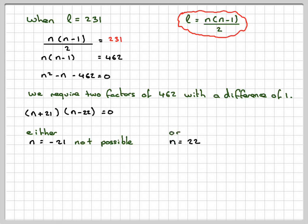Or, N equals 22, which gives 22 points, will give 231 lines.